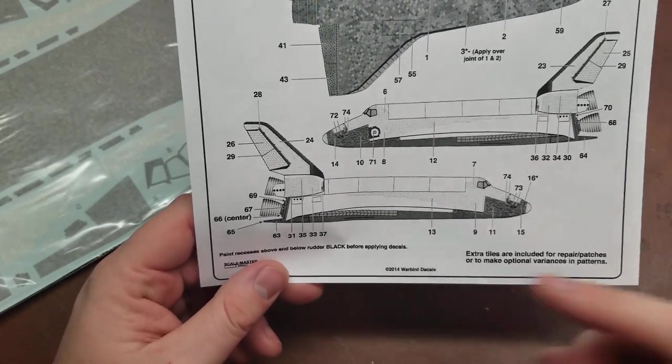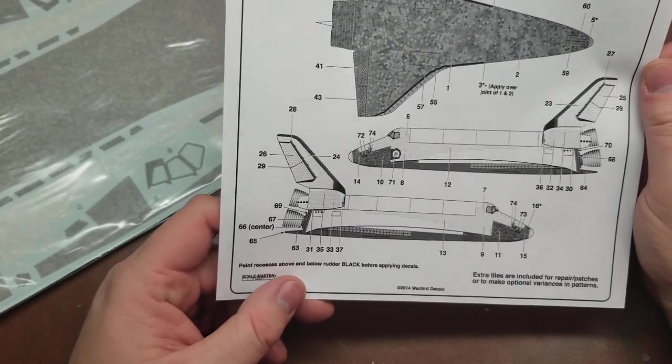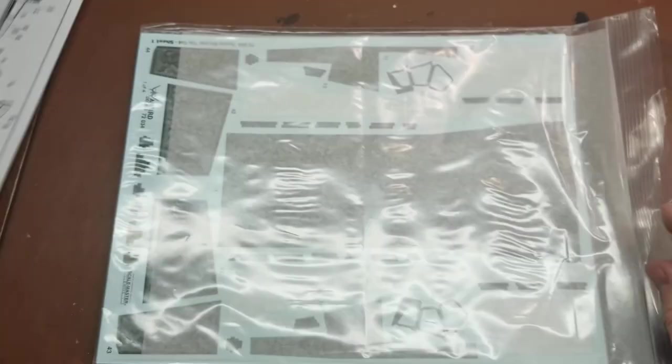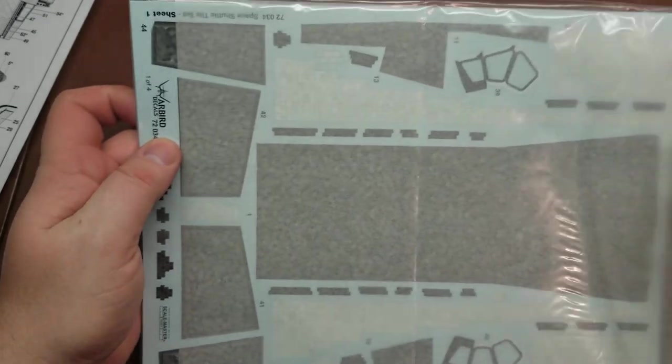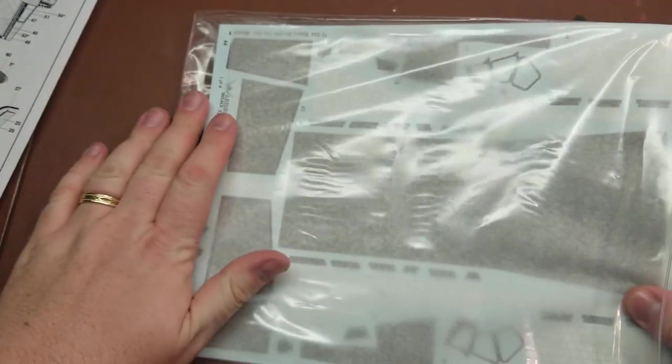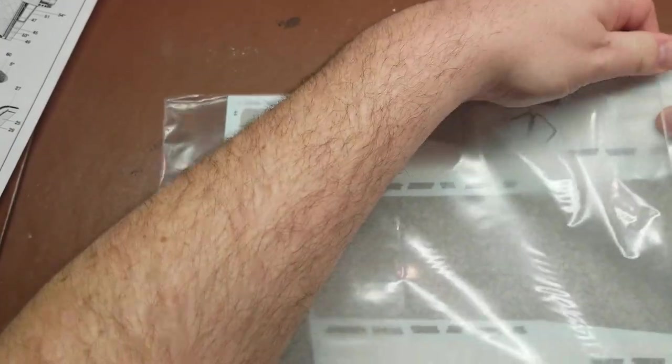The instructions give a couple of things like painting the rudder black before applying the decals, things like that, just clarification. So let's get into the sheets, and I do mean sheets - there are multiple sheets in this set.